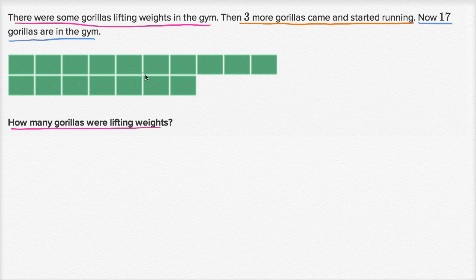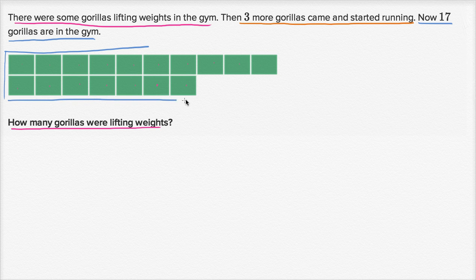So this 17 — this is how many gorillas there are now in the gym. So this is the 17 right over here. How many gorillas are now in the gym? That's the 17.